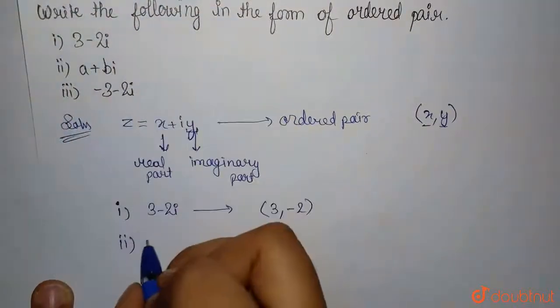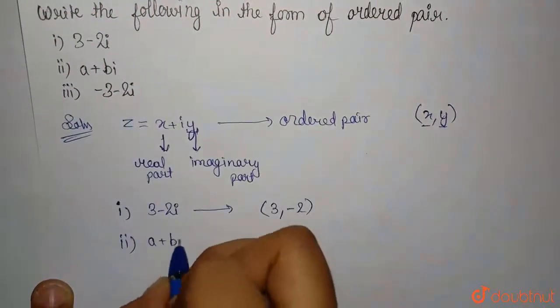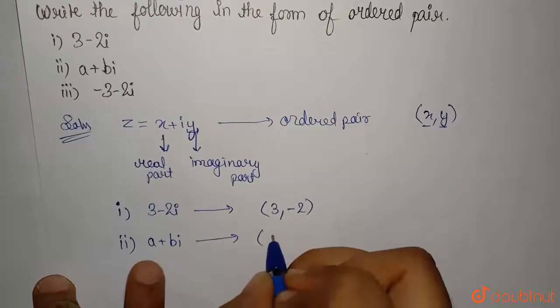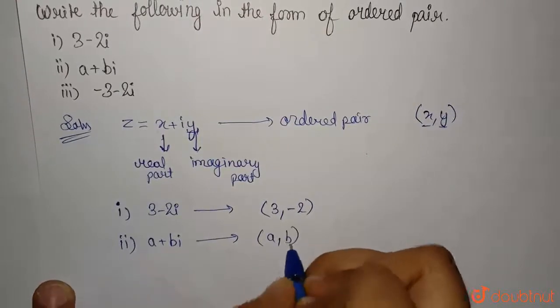Second, a plus bi. So this can be written as a comma b.